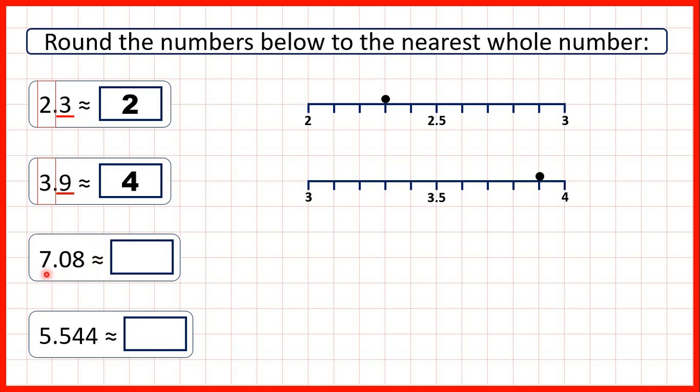Now we have 7.08. This time there are 2 digits after the decimal point, but that doesn't matter. We do the same thing. We find our ones digit and we look to our tenths, and it doesn't matter what comes after the tenths digit, because to decide whether we round up or down, we only look to the place value to the right, so to the tenths.